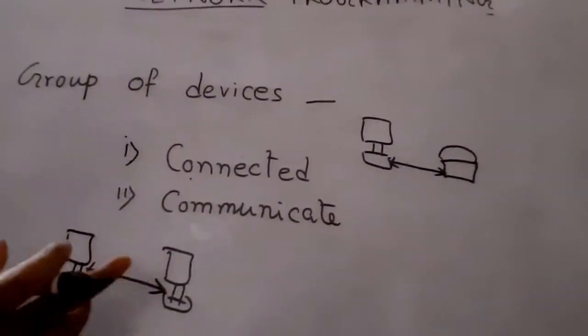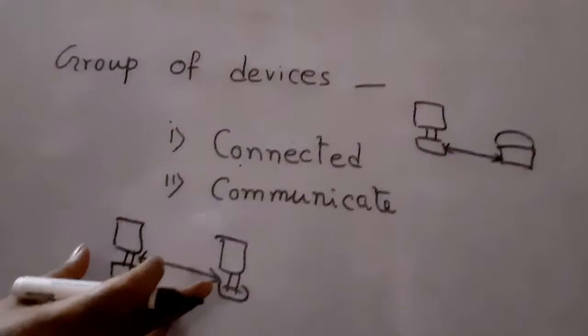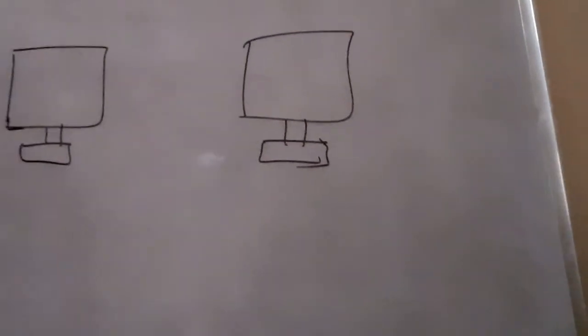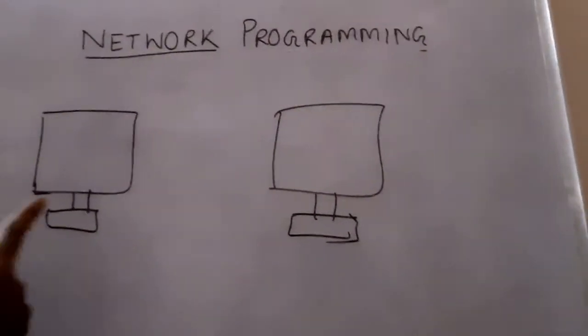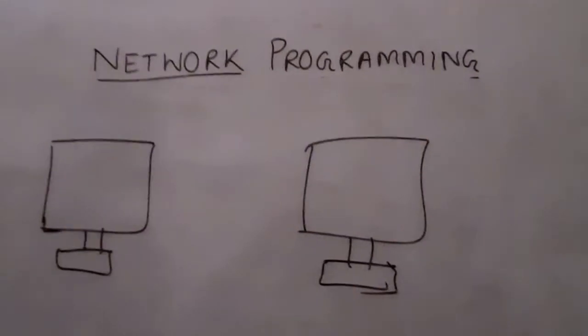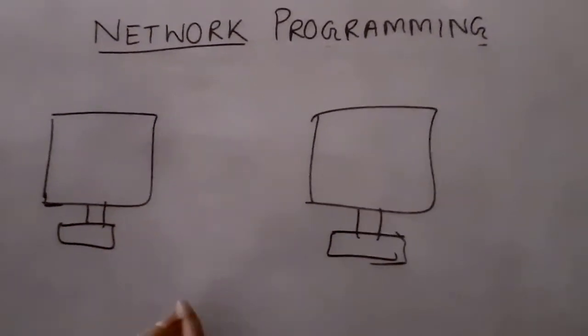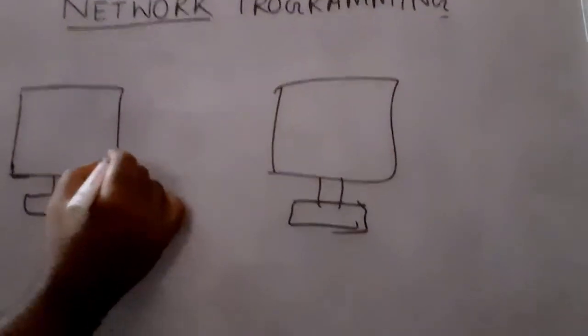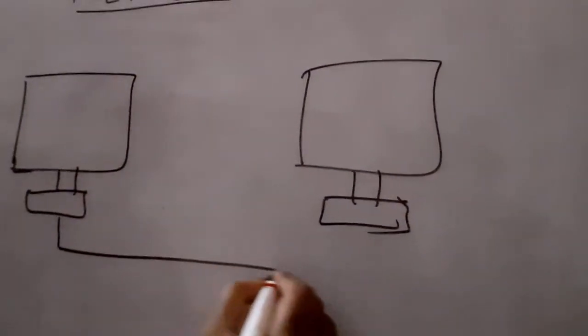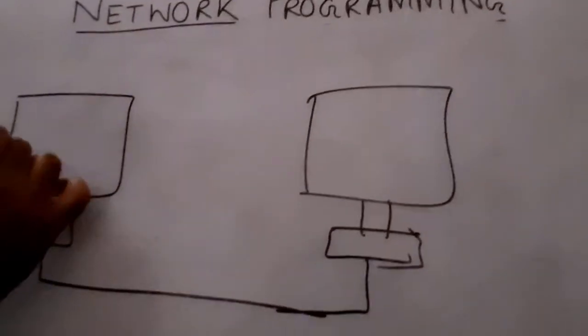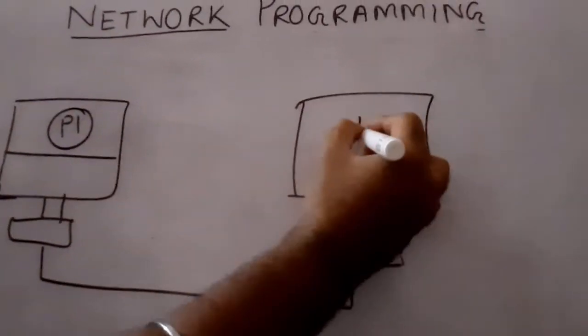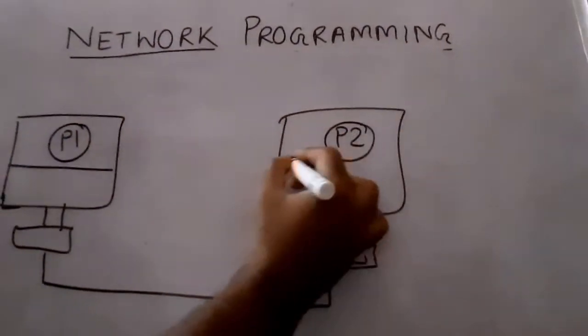So it is a network, a computer network. Now when we see two devices communicating - devices means these are hardware. Actually, two devices communicating means one program running in one system and another program running in another system are communicating.